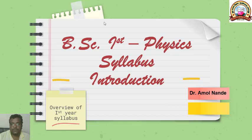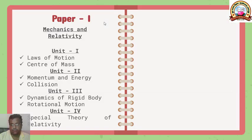In this semester you are going to learn basically two different papers of physics. In the first paper you are going to learn basics of mechanics and relativity. In the mechanics portion we are going to discuss laws of motion, center of mass. In the second unit, moment of inertia and collision. In the third unit, dynamics of rigid body and rotational motion. And the last unit is dedicated to special theory of relativity.